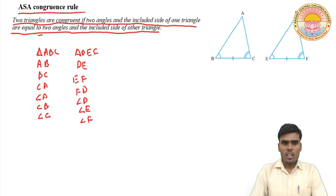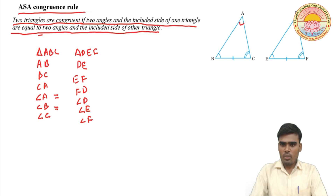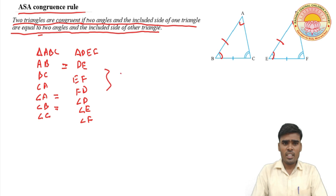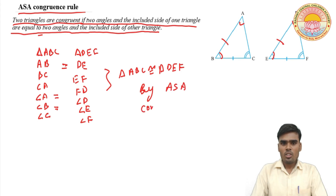If two angles are equal — अगर हम कहें कि angle A equal है angle D के, और angle B equal है angle E के — तो इनके बीच का included side होगा AB and DE. अगर AB equal है DE के, and angle A is equal to angle D, angle B is equal to angle E, then we can say that triangle ABC is congruent to triangle DEF by ASA congruence rule.